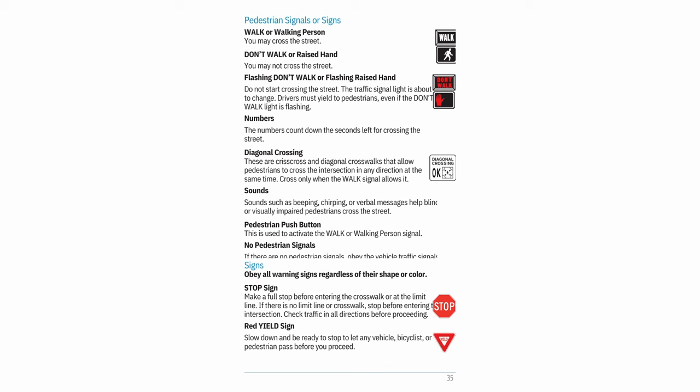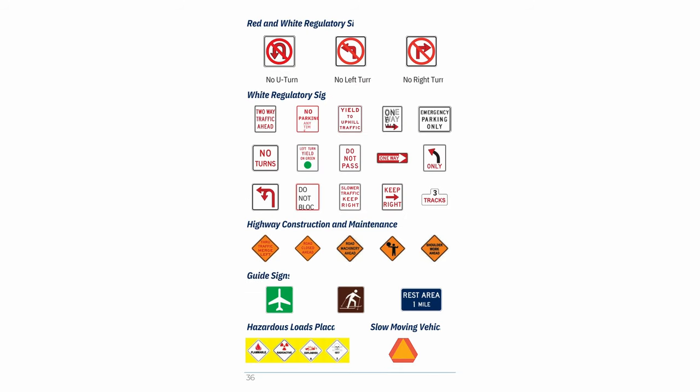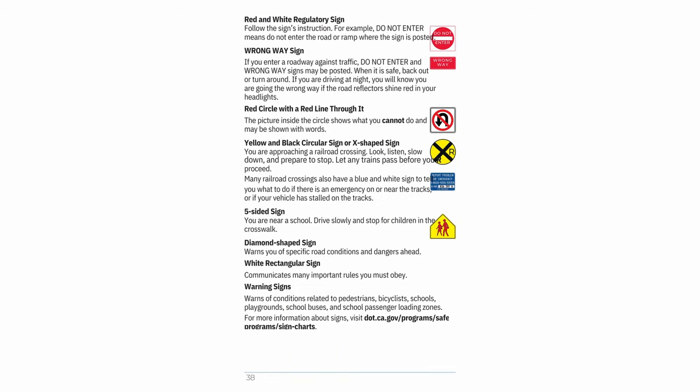No pedestrian signals: obey the vehicle traffic signals. Signs: Stop sign — make a full stop before entering the crosswalk or at the limit line; if there is no limit line or crosswalk, stop before entering the intersection; check traffic in all directions before proceeding. Red yield sign — slow down and be ready to stop to let any vehicle, bicyclist, or pedestrian pass before you proceed. Red and white regulatory sign — follow the sign's instruction (e.g., 'do not enter' means do not enter the road or ramp where the sign is posted). Wrong way sign — if you enter a roadway against traffic, back out or turn around when safe; at night, you will know you are going the wrong way if road reflectors shine red in your headlights.